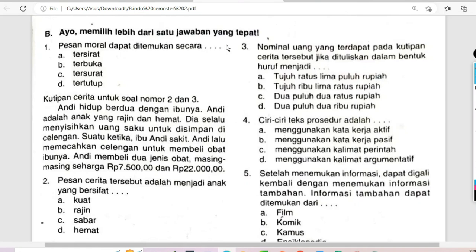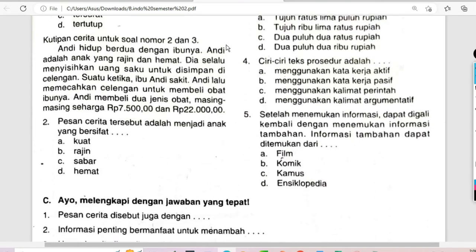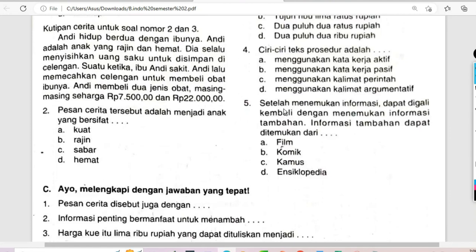Berikut soal nomor 5: Setelah menemukan informasi, dapat digali kembali dengan menemukan informasi tambahan. Informasi tambahan dapat ditemukan dari: A. Film, B. Komik, C. Kamus, D. Ensiklopedia. Informasi tambahan itu bisa kita temukan pada kamus (C) dan ensiklopedia (D). Jawabannya bisa C dan D.